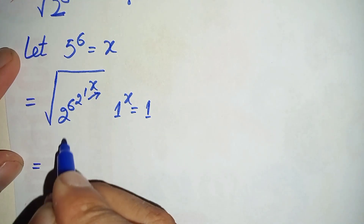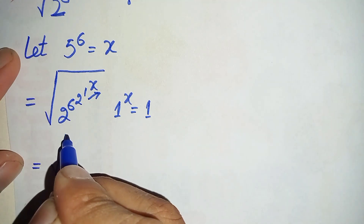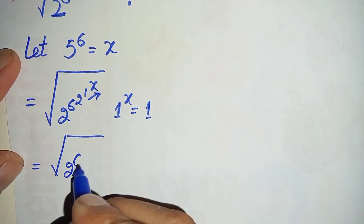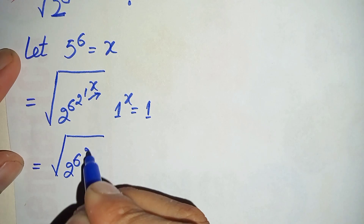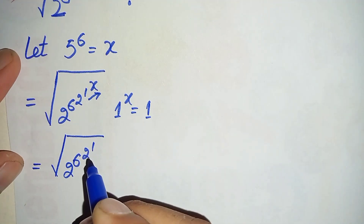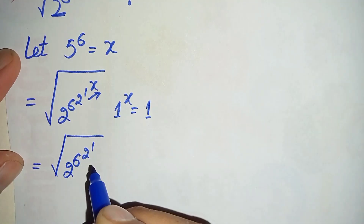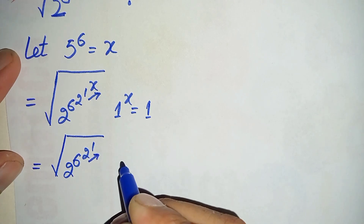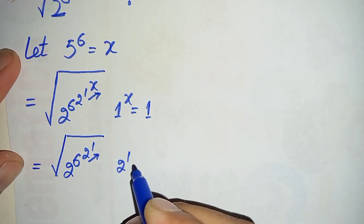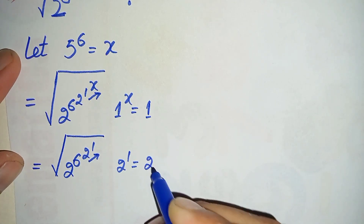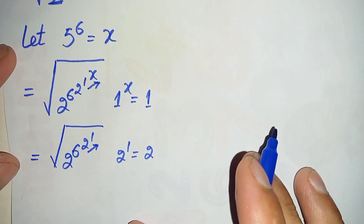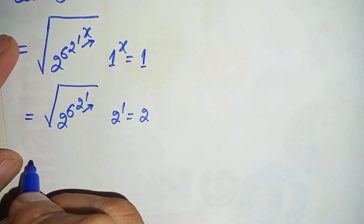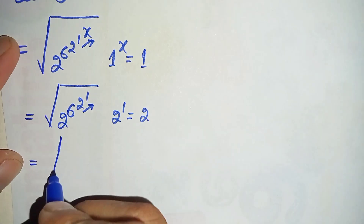This becomes the square root of 2 raised to power 6, raised to power 2, raised to power 1. Now we will solve 2 raised to power 1. As we know, 2 raised to power 1 means only 2, so we replace 2 raised to power 1 with 2.